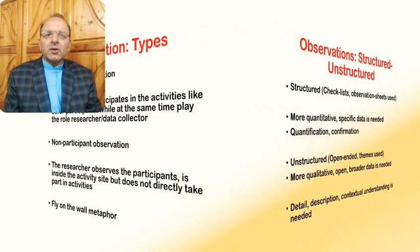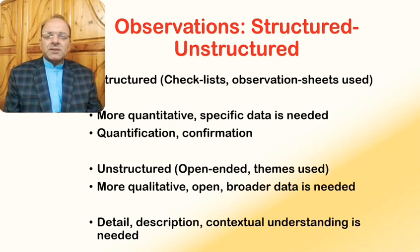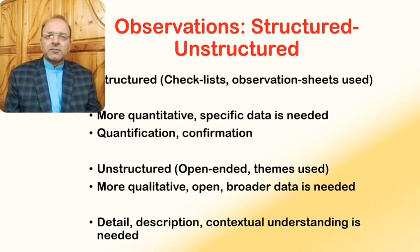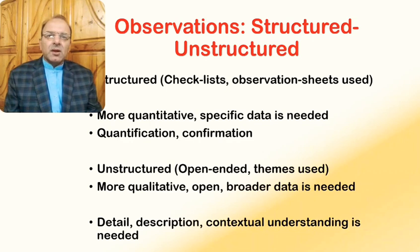Moving on to some further forms of observations: structured and unstructured observations. Structured observations generally take place in the form of checklists or observation sheets, and basically such observations take place when we need quantitative type of data or specific data is needed. The ultimate aim of such research studies is the quantification of phenomena, or the confirmation of certain aspects of the phenomena being explored. Observations recorded in the form of checklists — such as yes or no — use the structured observation format.